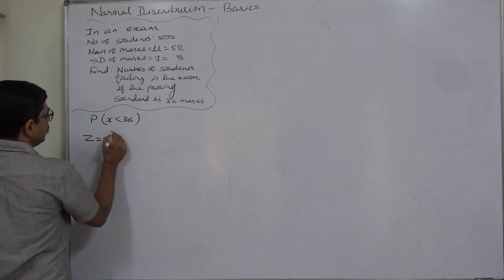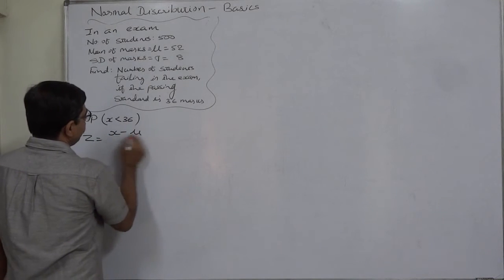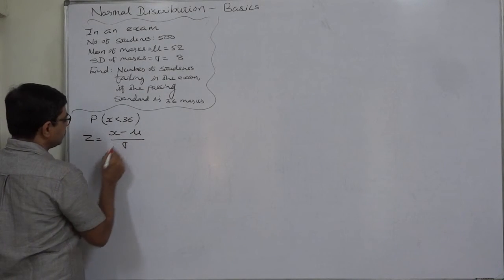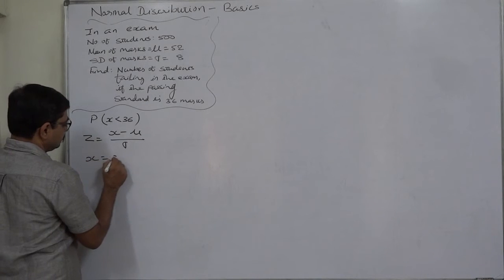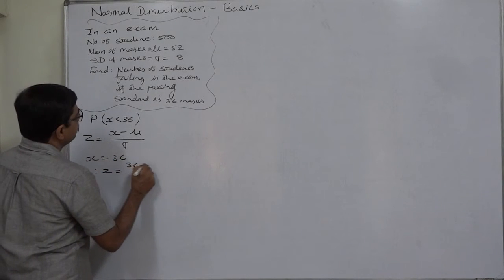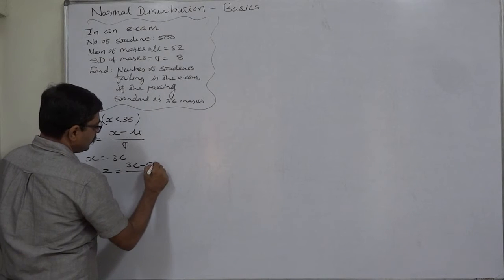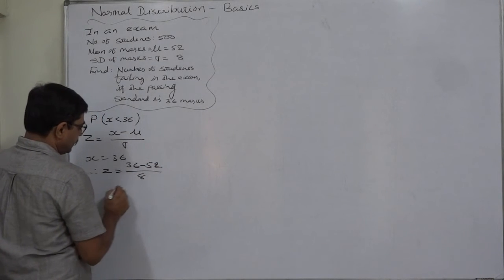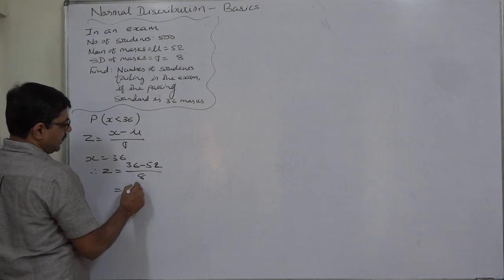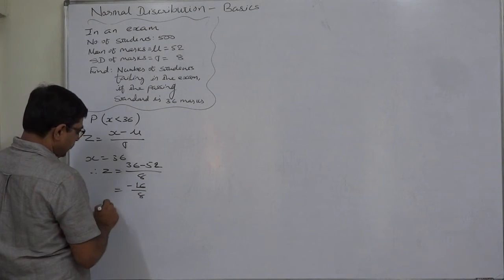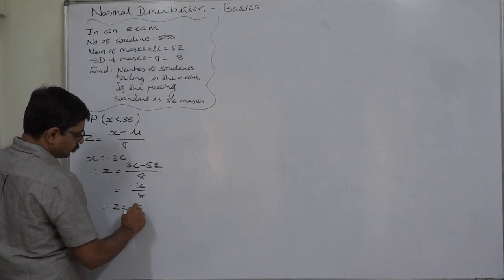Let us calculate Z first for X equals 36. 36 minus 52 upon 8, that is minus 16 upon 8. So Z comes to minus 2.